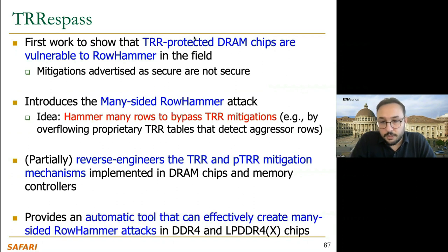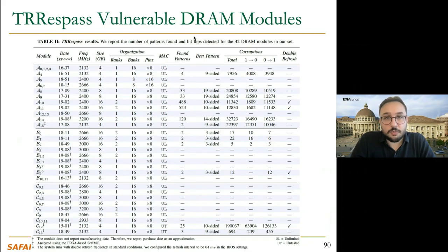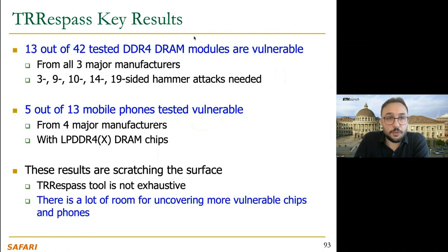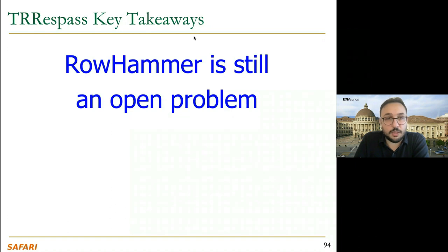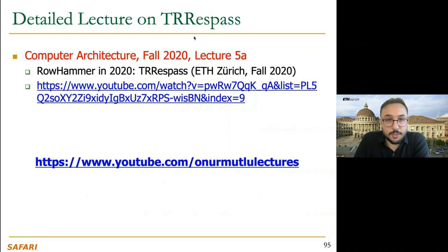TRRespass also partially reverse-engineers the TRR mitigation mechanisms implemented in DRAM chips, and provides an automatic tool to effectively create many-sided RowHammer attacks in DDR4 and LPDDR4. We tested many DRAM modules and showed this vulnerability on real mobile phones — conducting RowHammer attacks on page table entries to steal RSA keys and gain pseudo-privileges. 13 out of 42 tested DRAM modules were vulnerable to RowHammer, and 5 out of 13 mobile phones tested were vulnerable. TRRespass shows that RowHammer is still an open problem and security by obscurity is likely not a good solution.